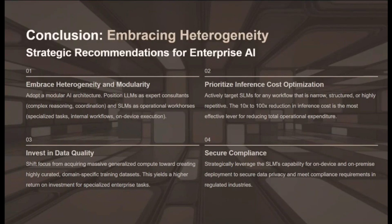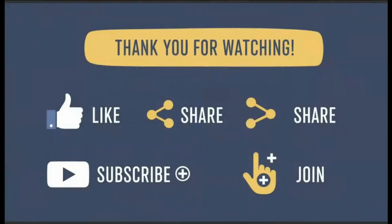The evidence overwhelmingly demonstrates that LLMs and SLMs are complementary architectural components, not competitive rivals. We offer four key strategic recommendations: First, embrace heterogeneity — treat LLMs as expert consultants for complex reasoning and SLMs as high-frequency operational workhorses. Second, prioritize inference cost optimization by targeting SLMs for routine workloads, leveraging their 10x to 100x reduction in inference cost. Third, invest in data quality by creating highly curated domain-specific training datasets for SLMs and utilizing robust quantization. Fourth, secure data sovereignty by leveraging SLMs' on-device and on-premises deployment capabilities to meet strict compliance requirements in regulated industries like healthcare, pharma, and finance.